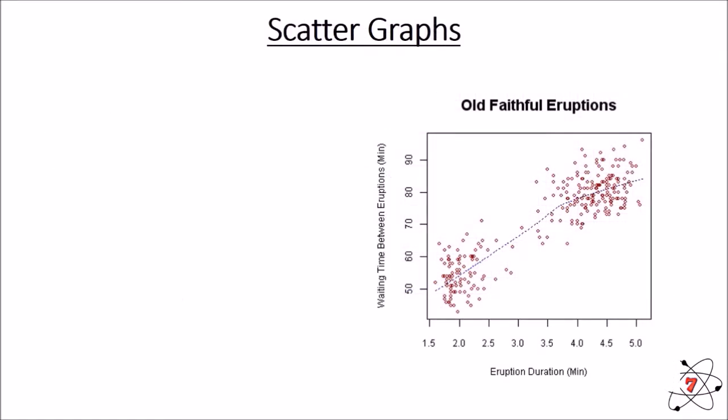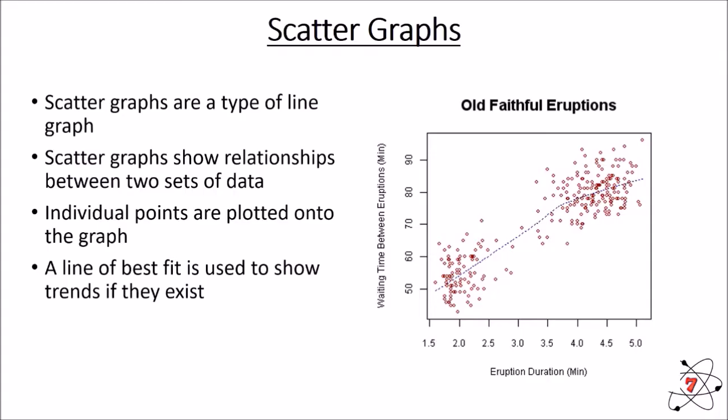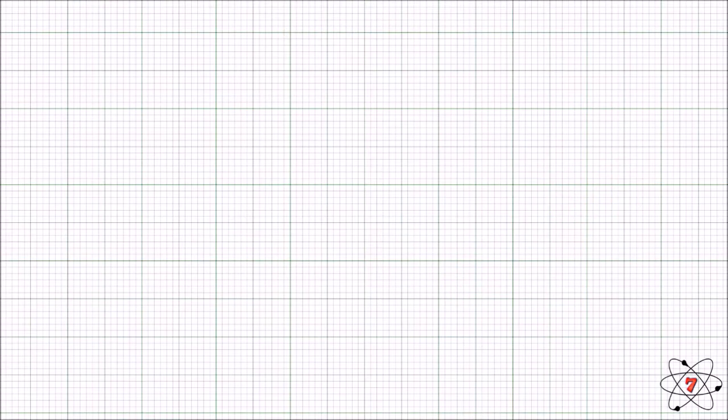Scatter graphs. Very, very similar to line graphs. In fact, they are a type of line graph. And they show the relationship between two different sets of data. So, individual data points are plotted onto the graph. Once all of those data points are plotted, if there is a trend, that line of best fit can be shown. Let's have a look at how we can draw these types of graphs.